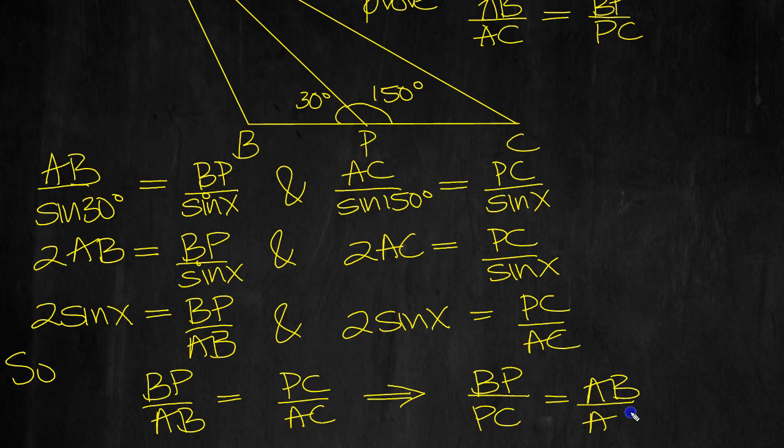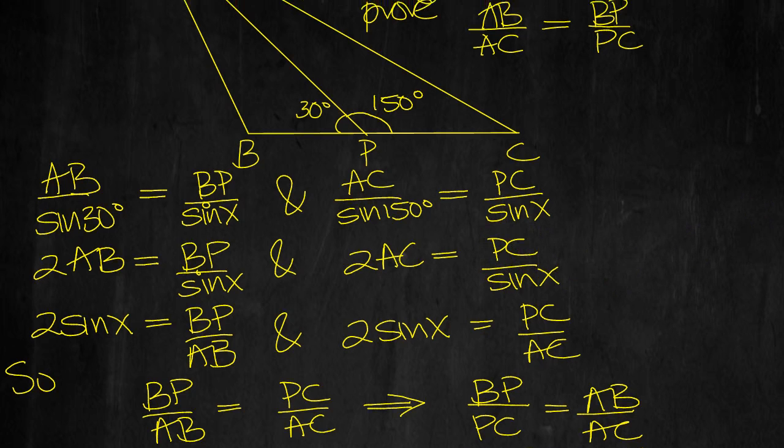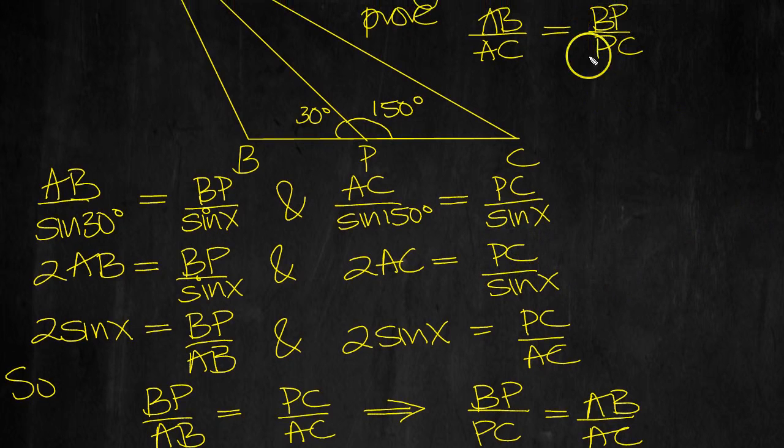We can do those two things in one fell swoop, and that's what we wanted to show: BP over PC is equal to AB over AC. We've done that.